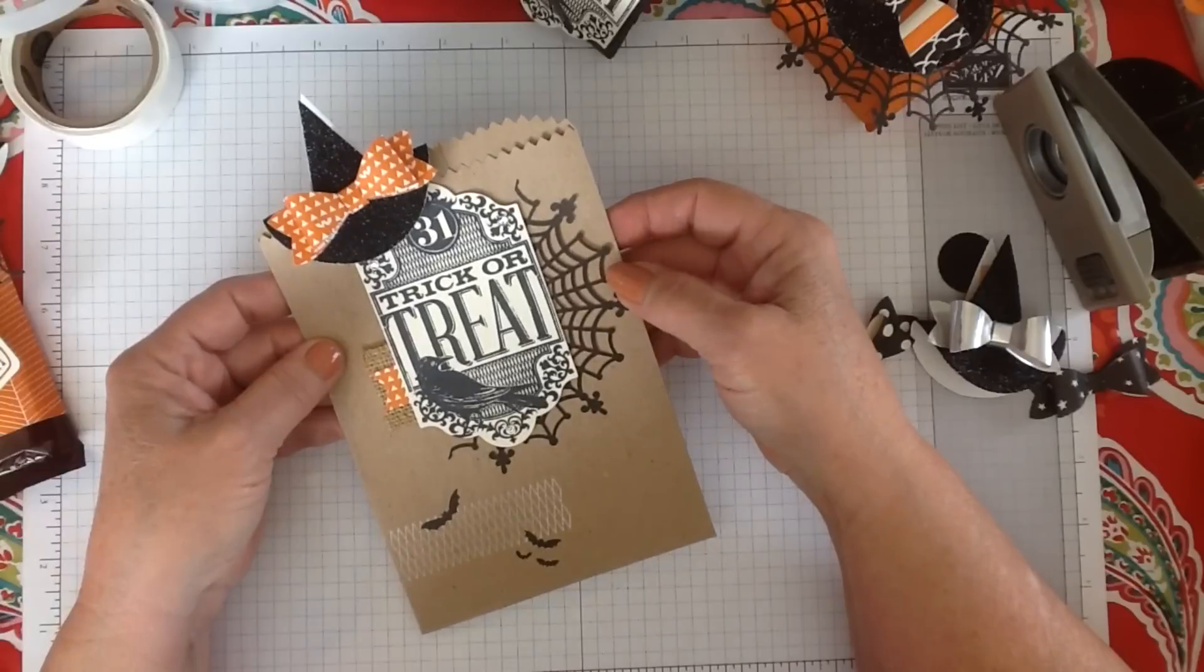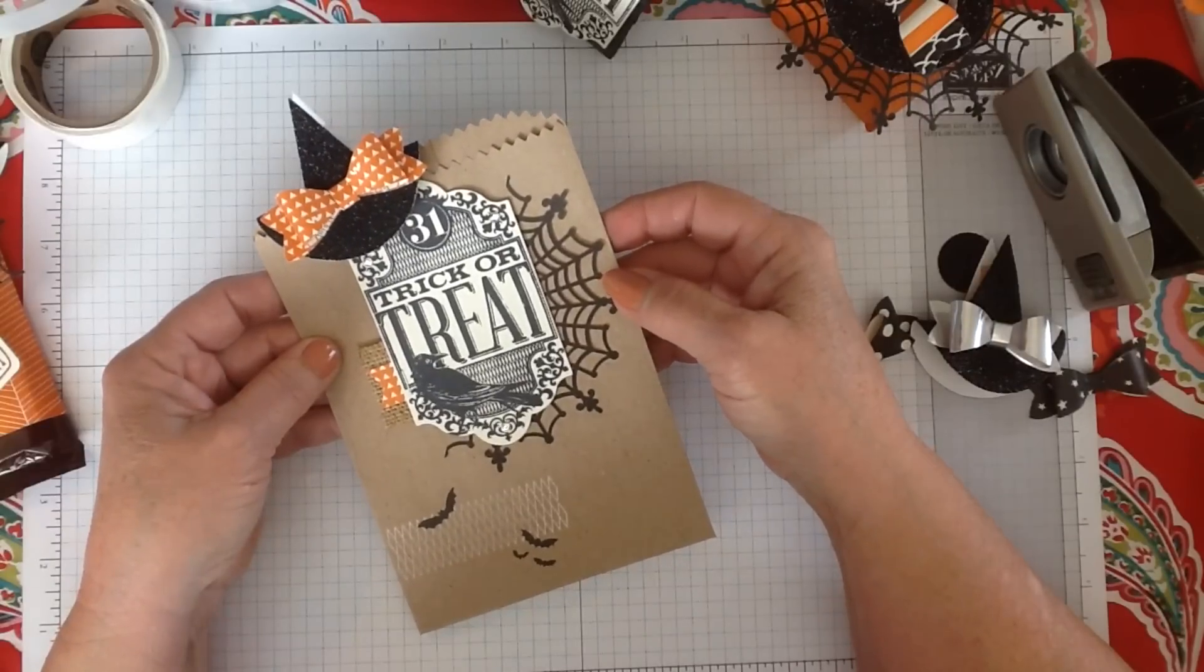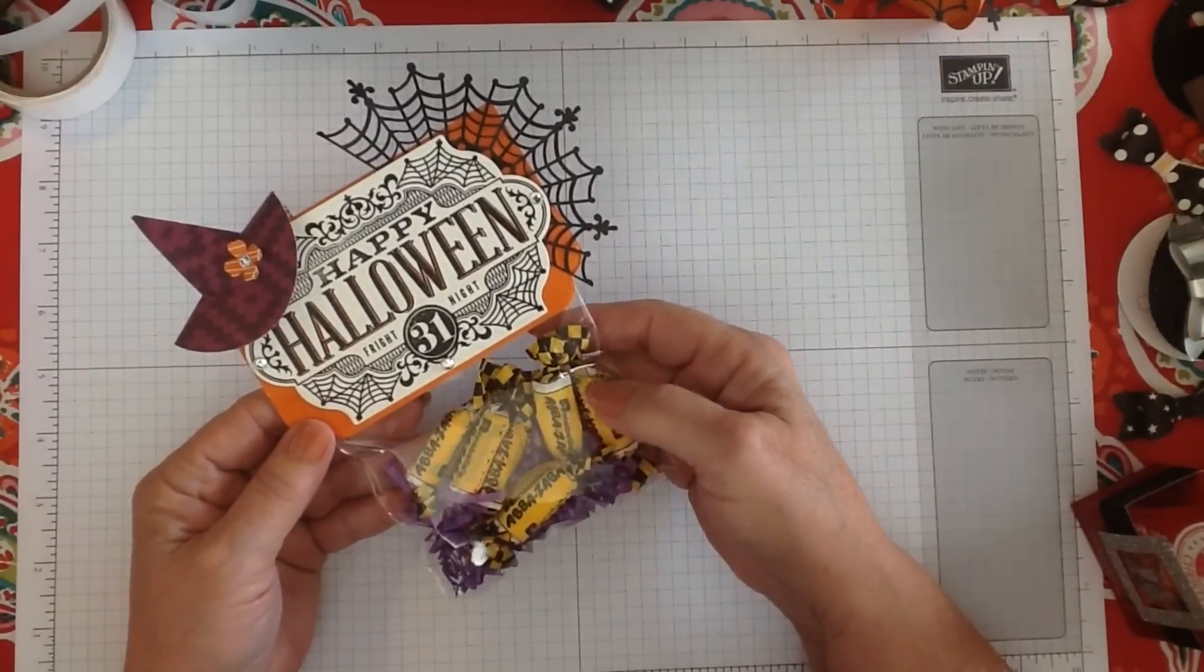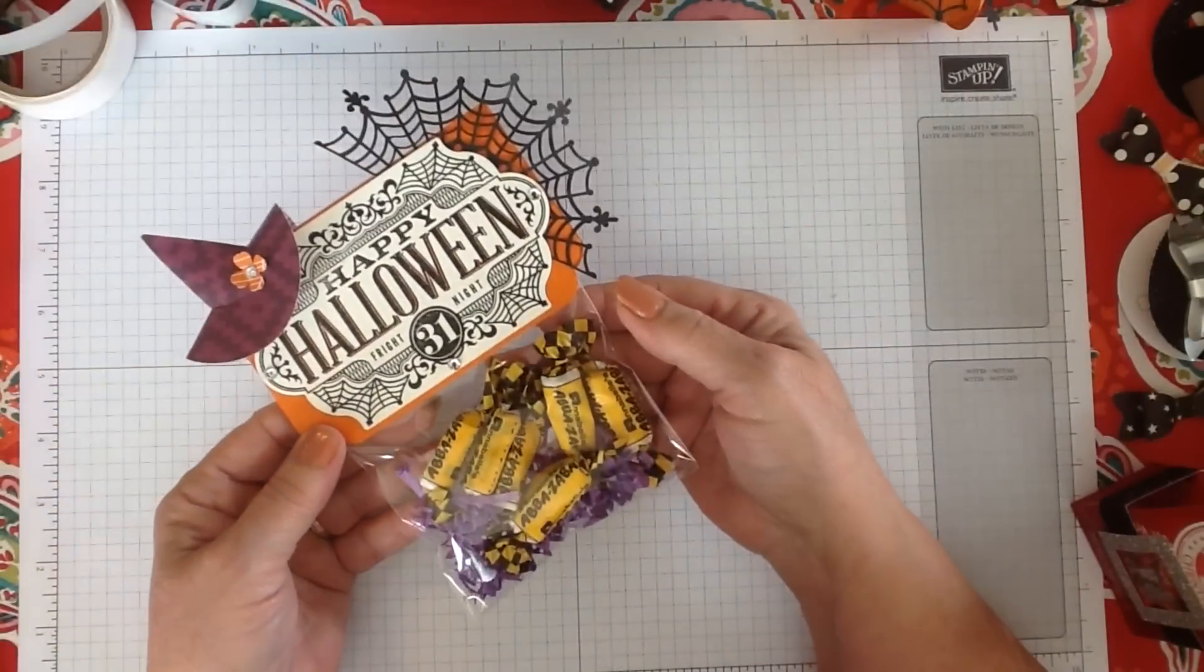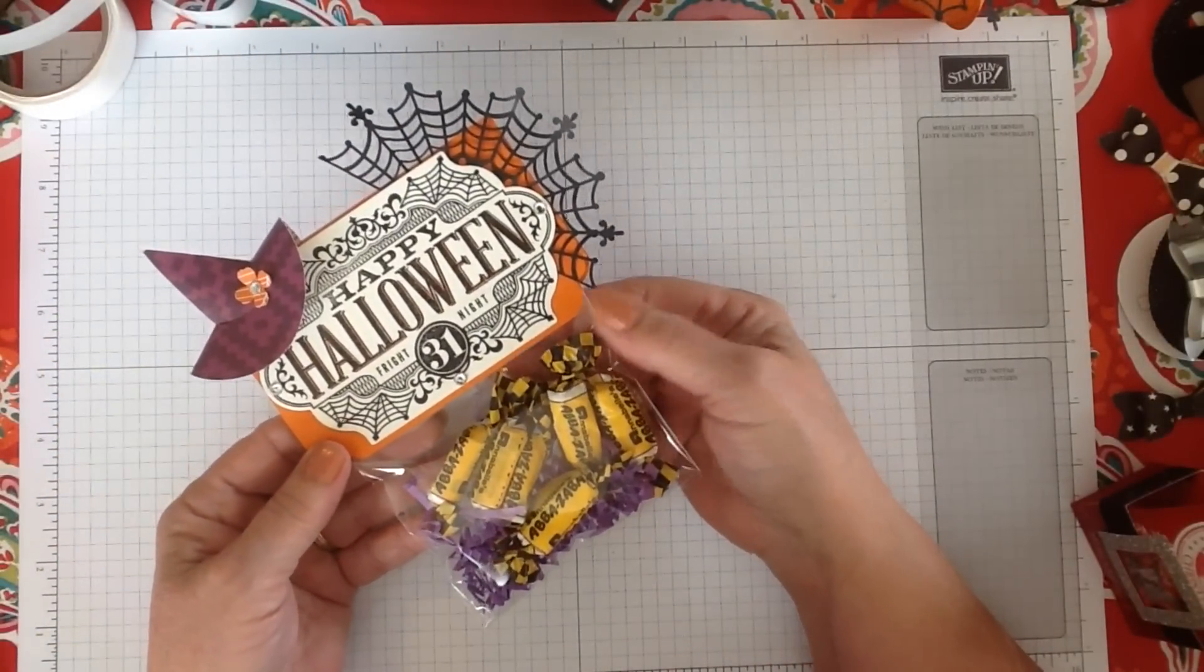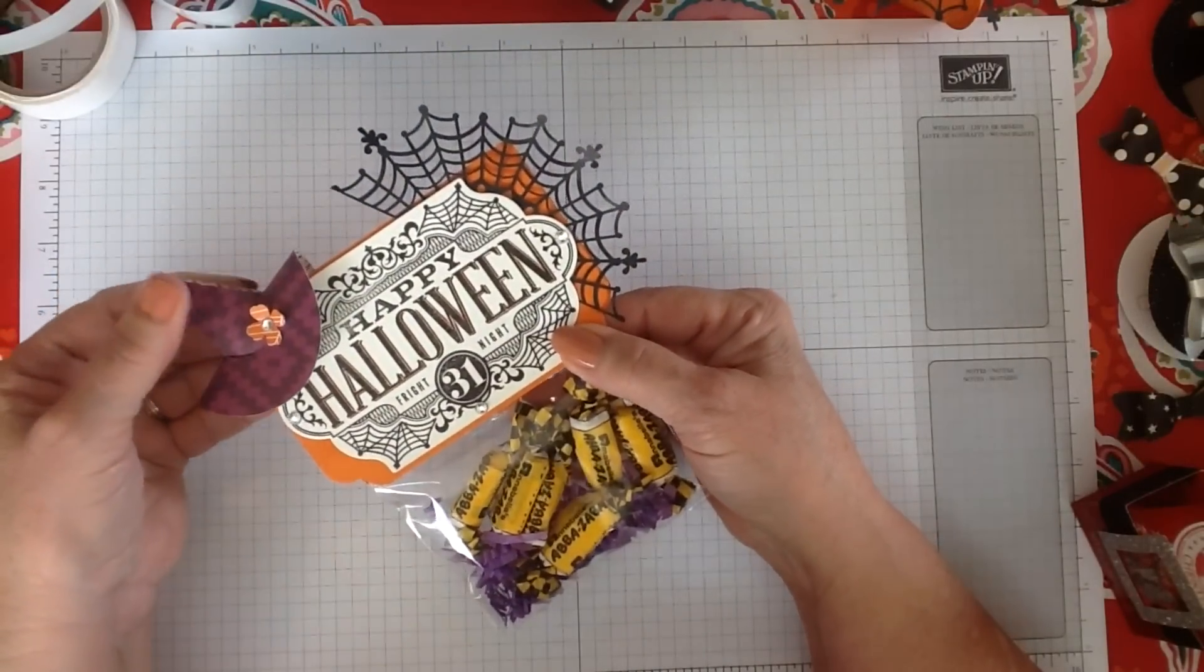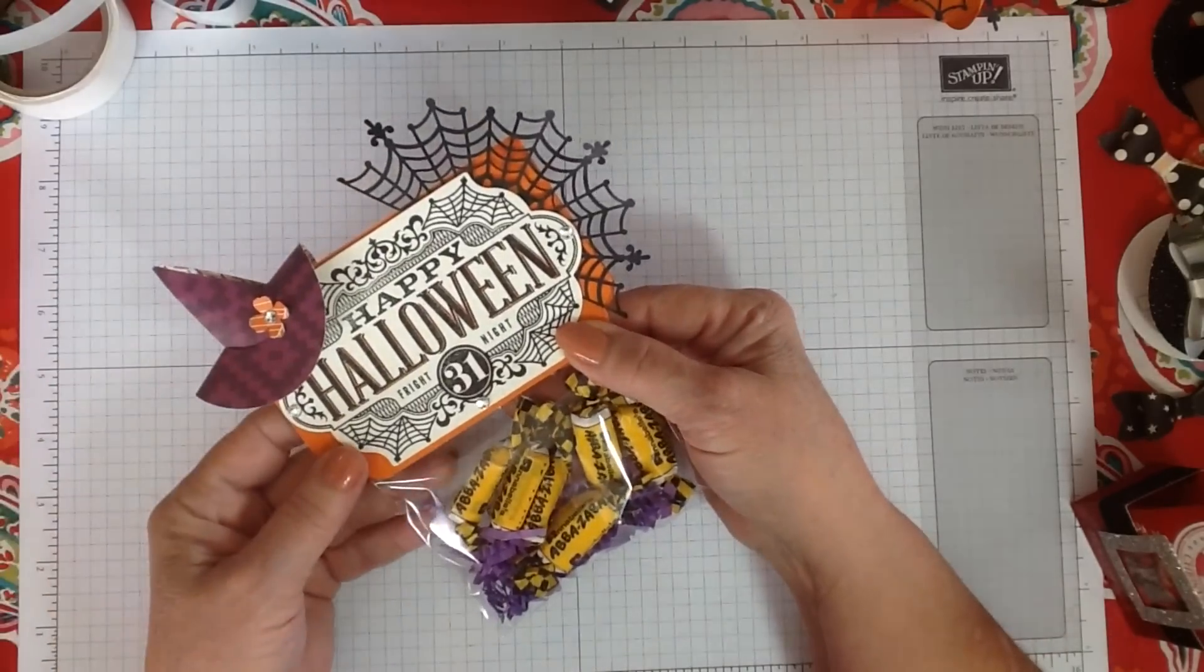Here's another one done with a bag topper, just our cello bag with some treats in it, with our little witch's hat on the corner. And that one just has a little flower on it instead of the bow.